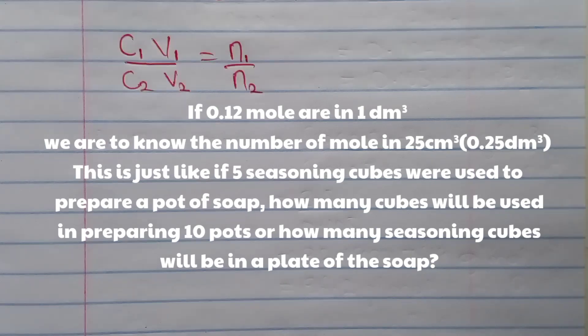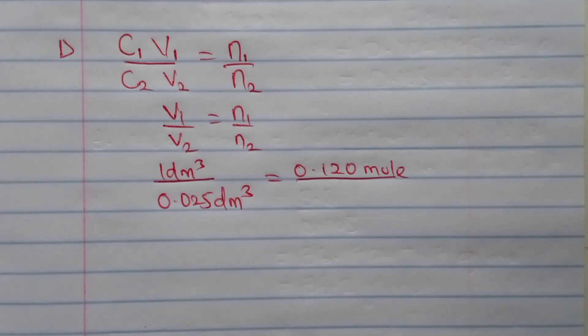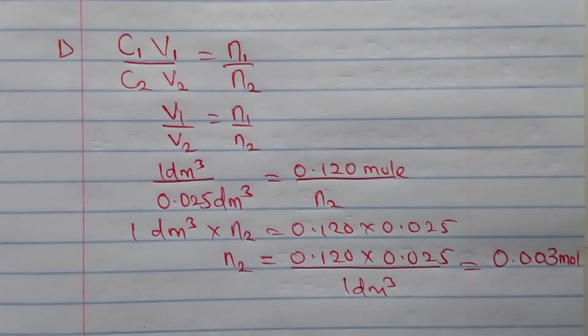We need the amount in moles of solution B in 25 cm³. Using C₁V₁ = C₂V₂, since concentration remains the same, C₁ cancels C₂, leaving V₁/V₂ = N₁/N₂. V₁ = 1 dm³, V₂ = 25 cm³ = 0.025 dm³, and N₁ = 0.120 moles given in the question. Making N₂ the subject gives 0.003 moles. We have now answered questions A, B, C, and D.